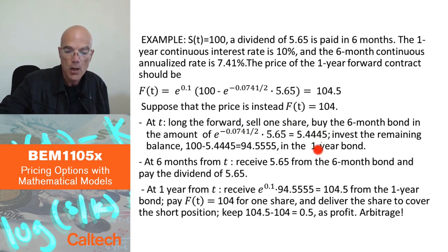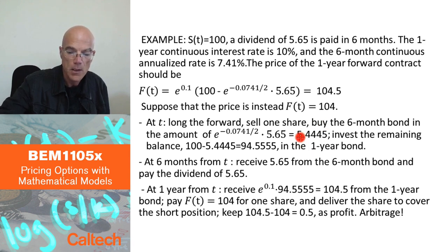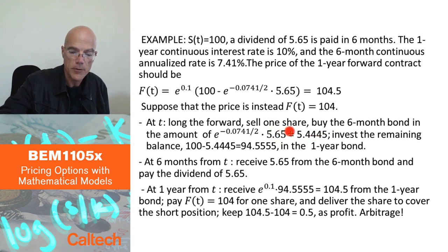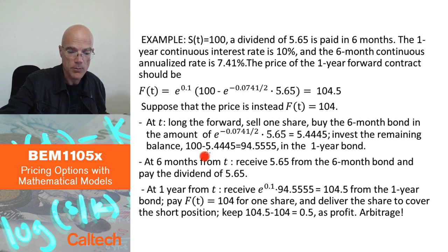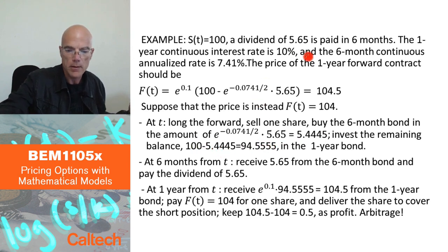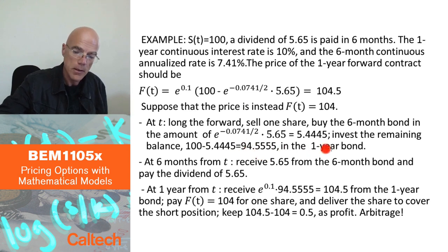So $5.4445 is how much I will invest in the six-month zero-coupon bond. That means that in six months, that bond will deliver $5.65 to me, which is what I need to pay the dividends. I still have from selling one share $100, and I pay $5.4445 to buy this six-month bond. So I have extra money. I put that remaining amount — $94.5555 — into the one-year bond at the rate of 10%.